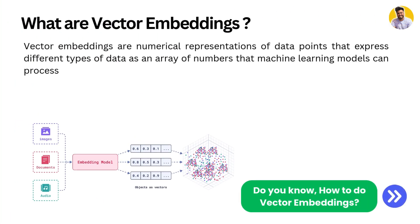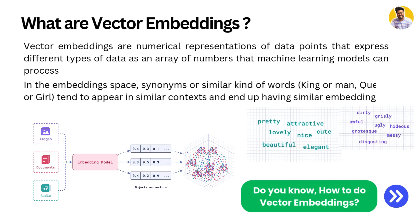So what are vector embeddings? Vector embeddings are the numerical representation of data points that express different types of data as an array of numbers that only machines can understand. We convert images, text, or audio into numerical representations that machines can understand and process. In the embedding space, synonyms or similar words like king and man, or queen and girl, tend to appear in similar contexts and end up having more similar embeddings — not always identical, but kind of similar.